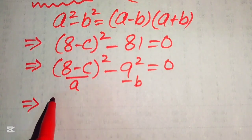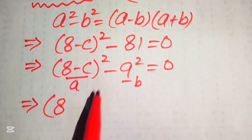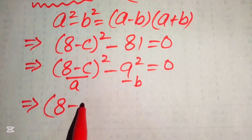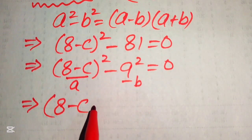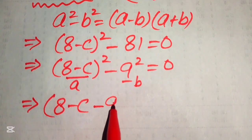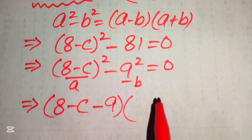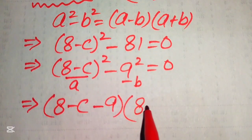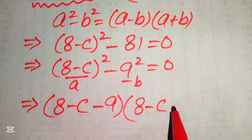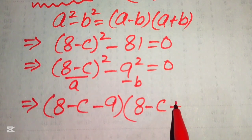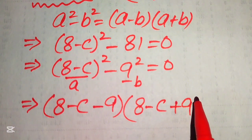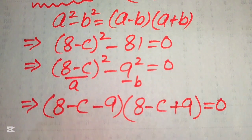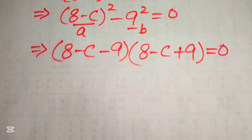Applying the difference of squares formula, where A is (8 minus C) and B is 9, we write: (8 minus C minus 9) times (8 minus C plus 9) equals 0.